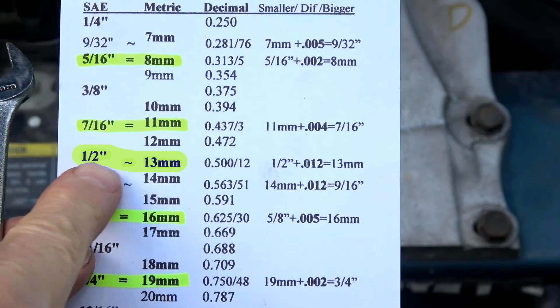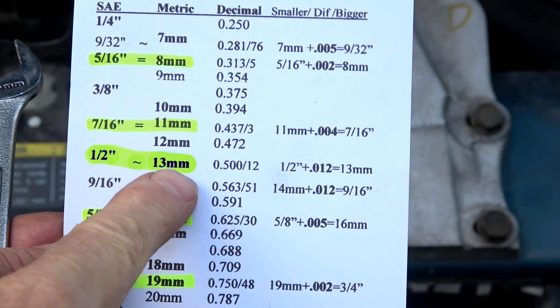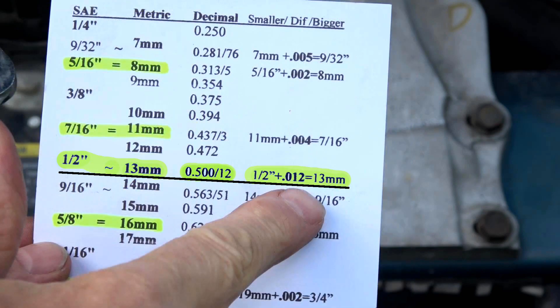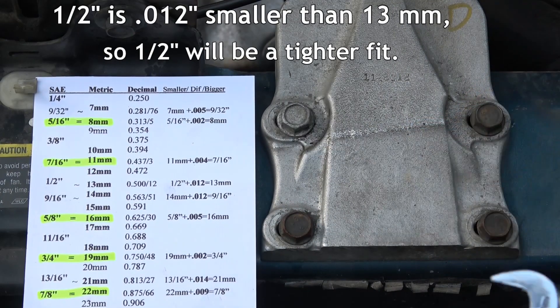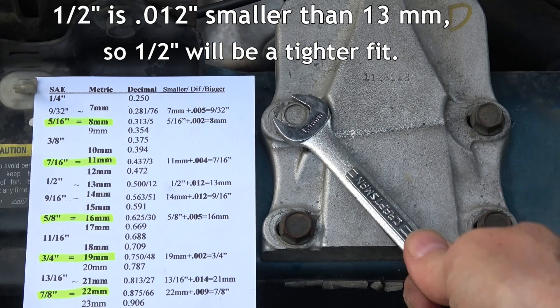Half inch is often considered to be equal to 13 millimeters, and either will work well in most cases, but half inch is actually 12 thousandths of an inch smaller, so if you have both available and the half inch works, I would use it because you'll get a tighter fit, thus less chance of stripping.